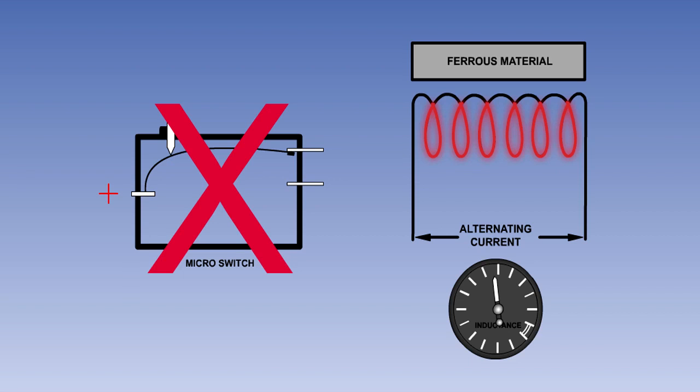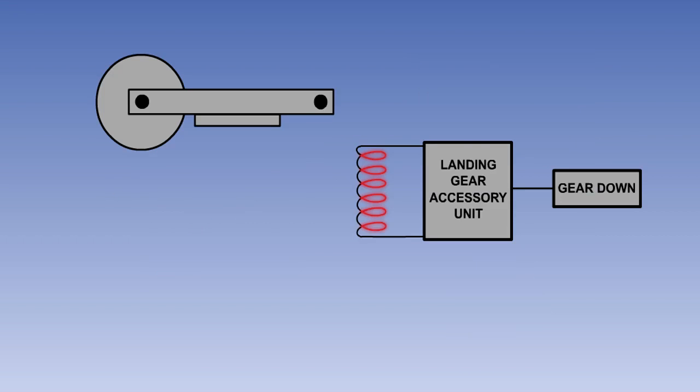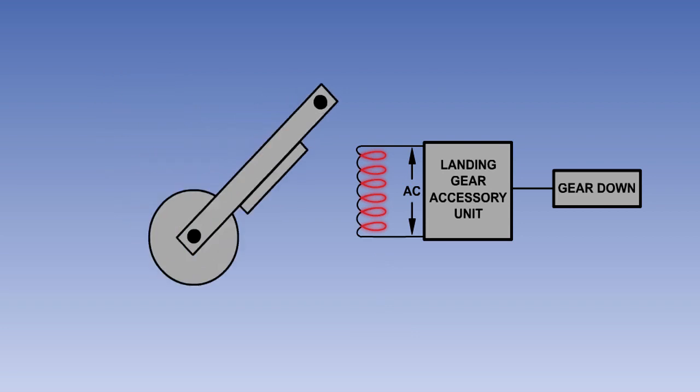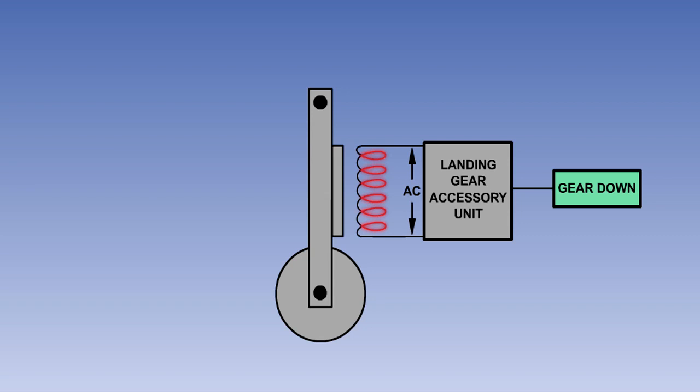In a typical undercarriage system, each proximity sensing unit will consist of three components: an electronic circuit which is contained in a component known as the landing gear accessory unit—this circuit is able to sense changes in inductance and switch the appropriate gear light on and off in response to these changes—a sensor consisting of an AC coil located on appropriate landing gear structure, and a ferrous metal target for each sensor. When the part of the gear being monitored is in the correct position, the target and the sensor are in close proximity to each other. This changes the inductance in the coil, and the electronic circuit will then produce the appropriate indication.